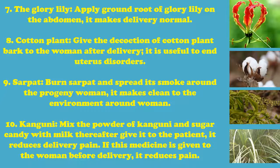7. Glory Lily: Apply ground root of glory lily on the abdomen. It makes delivery normal. 8. Cotton Plant: Give the decoction of cotton plant bark to the woman after delivery. It is useful to end uterus disorders.